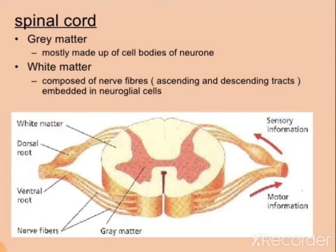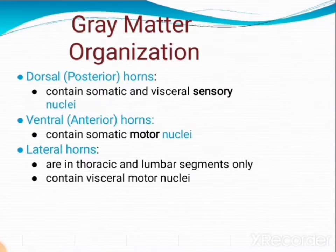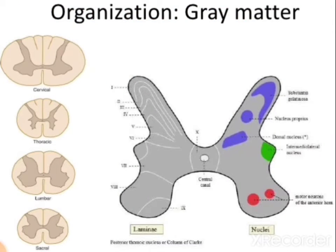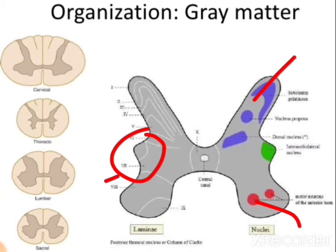The white matter contains nerve fibres and neuroglial cells only — there are no blood vessels. The grey matter is organized into dorsal horn (sensory), ventral horn (motor, containing motor nuclei), and lateral horn (only in upper thoracic and lumbar regions, containing visceral motor nuclei supplying the viscera). These are the three parts of the grey matter.